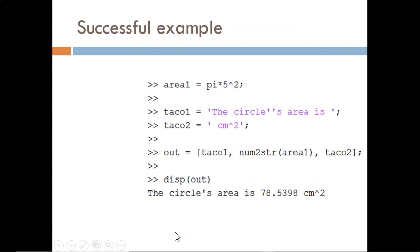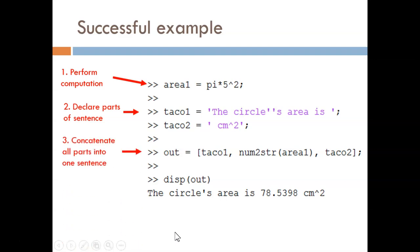Here is a good example. In this code, we first compute the area of a circle. Then, we create the different pieces of the sentence we want to write. Then, we concatenate all those pieces, including the number, into a single sentence and store it to a variable. Finally, we display that full sentence. Notice the nice appearance of this sentence.